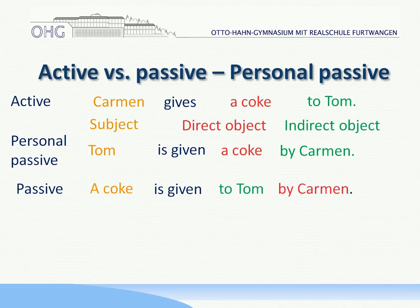You could also make a general passive sentence: a coke is given to Tom by Carmen. You see that the word order is a little bit different. So both sentences work in the passive — the personal passive is specifically this swap between subject and indirect object.